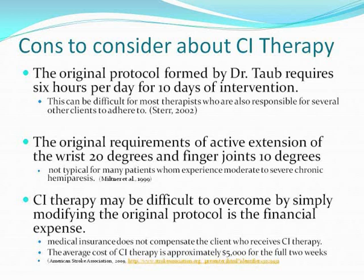Modified CI therapy is an alternative to the original protocol to allow for a more realistic intervention schedule. One study showed significant improvements in the affected arm after practicing CI therapy for 3 hours per day for 20 days. Although the same total of 60 hours was required, the intervention was distributed over twice the number of days, resulting in less effectiveness than the original protocol.